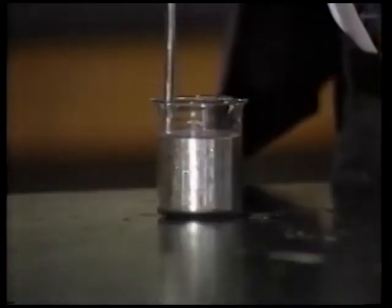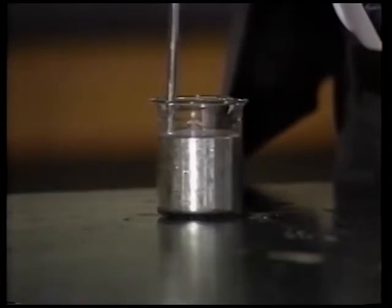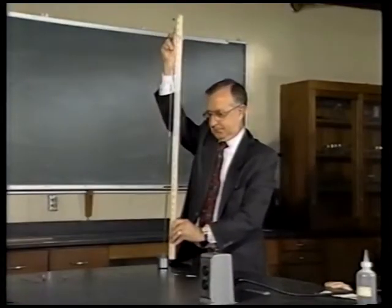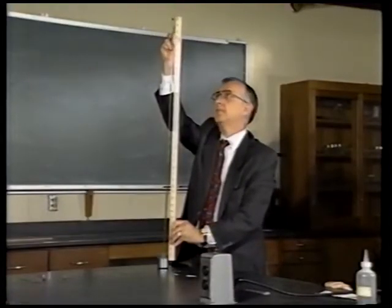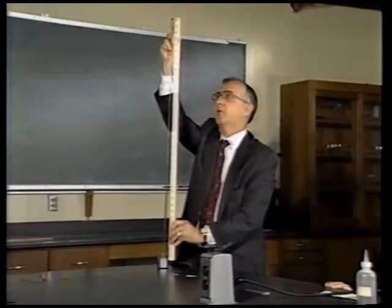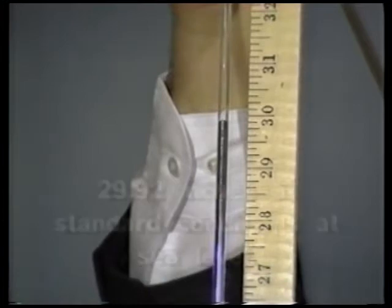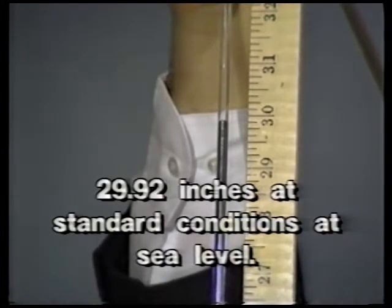In fact, we can actually determine by measuring the height of the mercury in the tube just how much pressure is exerted by the air piled upon the earth's surface. As you can see, the column of mercury is approximately 30 inches — actually it's 29.92 inches under normal conditions at sea level.